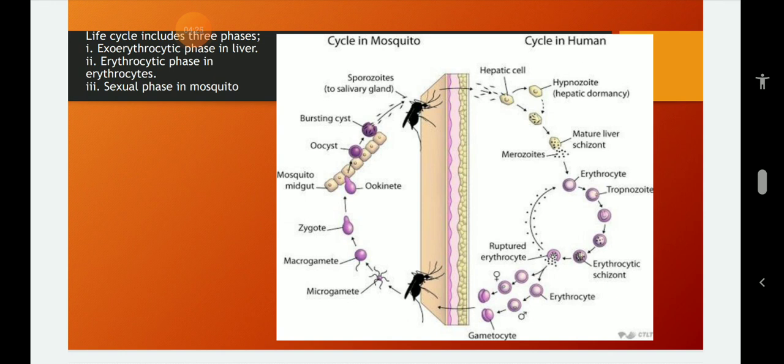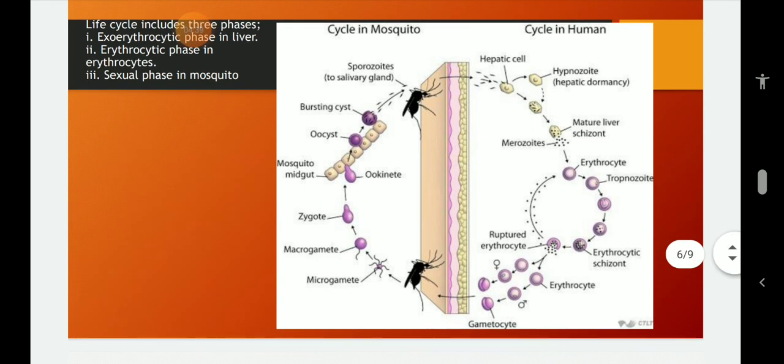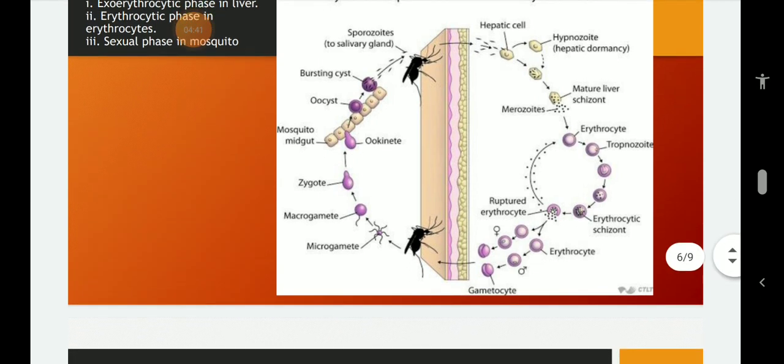The successive stages noticed inside RBC during erythrocytic schizogony are trophozoites, signet ring, amoeboid, schizont and rosette stage. RBC ruptures releasing these merozoites into the bloodstream. After many successive cycles of erythrocytic schizogony, certain merozoites differentiate into microgametocytes and megagametocytes and they do not develop further in man's blood.